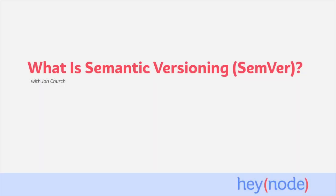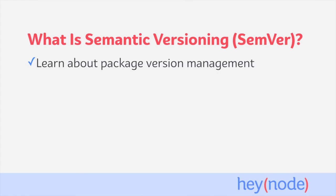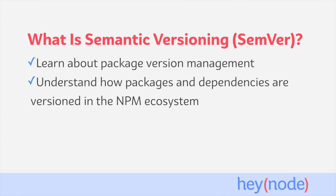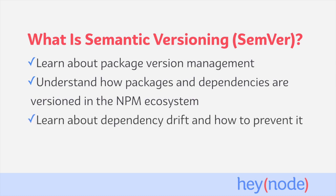The NPM ecosystem uses semantic versioning, also known as semver, combined with rule symbols to record what versions of a package satisfy a dependency. This system helps us control which version of a package we use in our applications and easily update to new compatible versions when available. In this tutorial, we'll learn about package version management and why it's important, understand how packages and dependencies are versioned in the NPM ecosystem, and learn about dependency drift and how to prevent it.